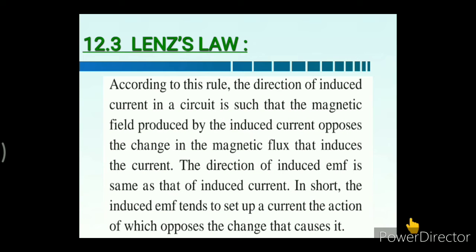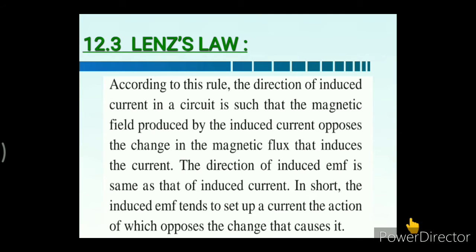Lenz's law states that the direction of induced current in a circuit is such that the magnetic field produced by the induced current opposes the change in the magnetic flux that induces the current. The direction of induced EMF is the same as that of induced current. In short, the induced EMF tends to set up a current whose action opposes the change that caused it.